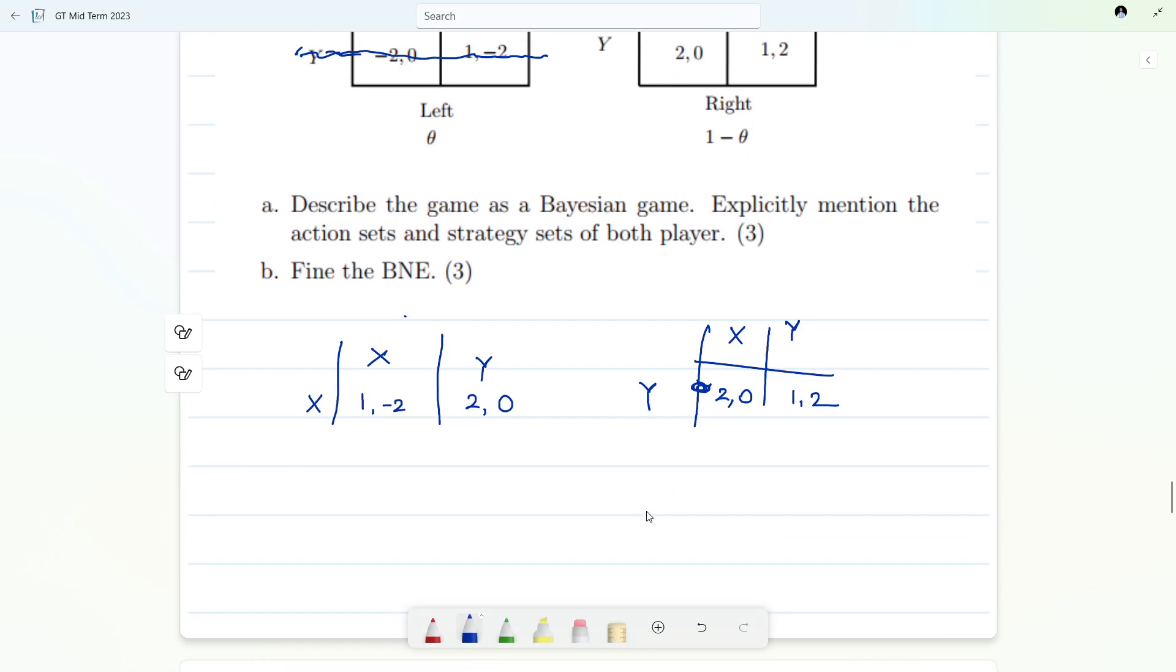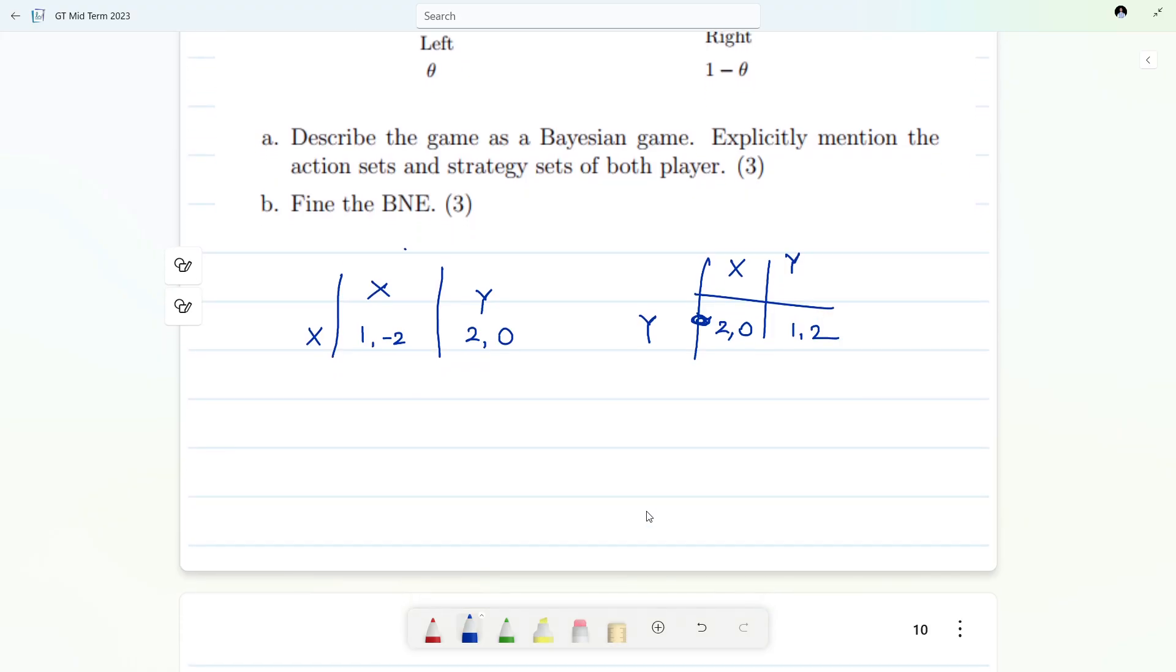What player two will do? Because player two knows that playing Y every time is giving him higher payoff: here minus two, zero better, zero, two better. Hence player two will always choose Y.